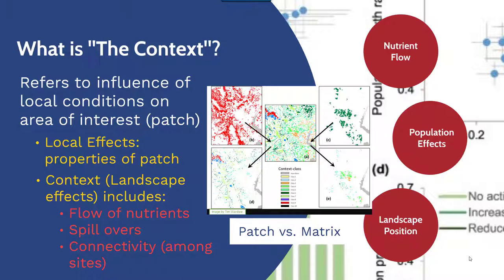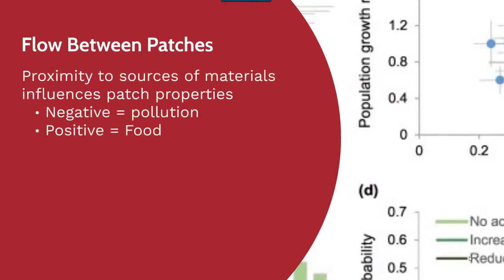It's important to note that we're looking at the relationship between the patch or the habitat of interest and the matrix, which is all those elements that are going to influence as well as contribute to the dynamics of that region. There's going to be a proximity of sources of materials that can influence the patch properties — these can be negative or positive influences.